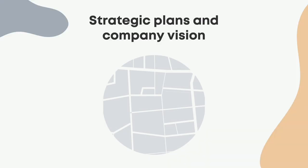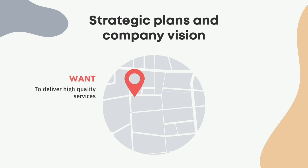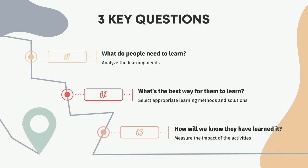Here's a typical situation. At the beginning of the year, each business unit sets goals based on the strategic plans and vision for the company. For example, if the organization wants to deliver high-quality services, one goal could be to implement three quality control checks to ensure customer satisfaction scores of 85%. The role of L&D is to find out the learning needs for this business unit, select the most appropriate learning methods, and measure the impact from these activities.